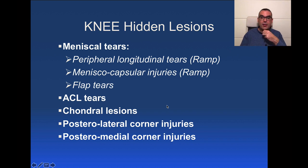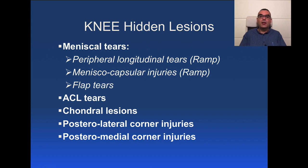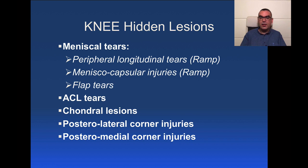Hidden lesions of the knee are lesions that must be clarified in the report because arthroscopic assessment might miss them. MRI plays a major role in their identification. If you miss these on MRI, the surgeon can go in with an arthroscope and also miss the lesion, causing a chronic problem. The most important hidden lesions include meniscal flap tears — tears with displaced fragments.